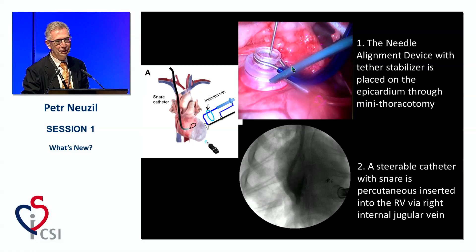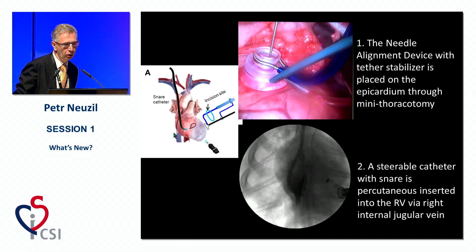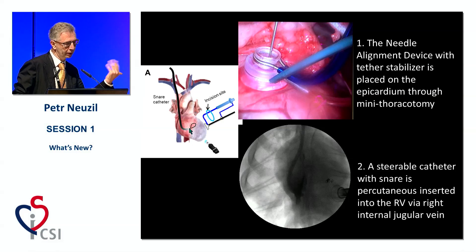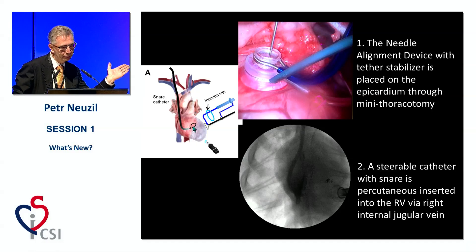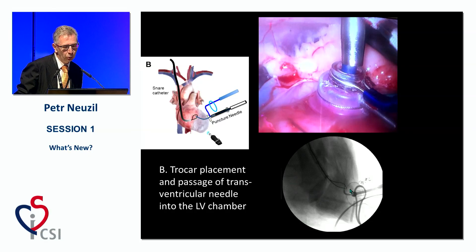On the surgical side: we have a stabilizer on the left ventricle lateral wall, and the surgeon needs to puncture the free wall and get the needle through the left ventricle cavity, through the septum. On my side, with a jugular approach and a steerable catheter, I place the loop of the snare just on the right side of the septum.